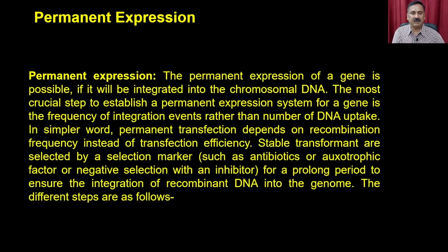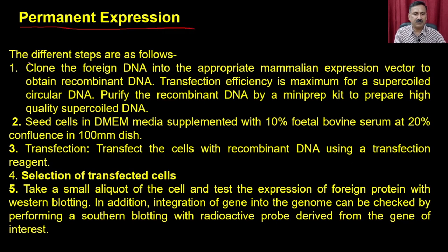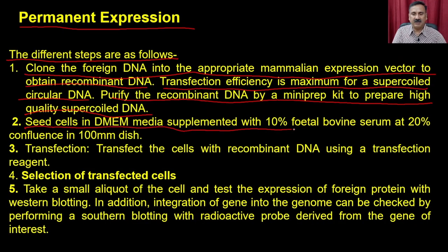Permanent expression of a gene is possible if it is integrated into the chromosomal DNA. The permanent expression also has multiple steps. In step one, you clone the foreign DNA into an appropriate mammalian expression vector to obtain the recombinant DNA. Transfection efficiency is maximum for supercoiled DNA, so you can purify the recombinant DNA by a miniprep to prepare high-quality supercoiled DNA, because higher transfection efficiency increases the chances of DNA integration into the genome. You seed the cells in DMEM media supplemented with 10% FBS at 20% confluency in a 100 mm dish.